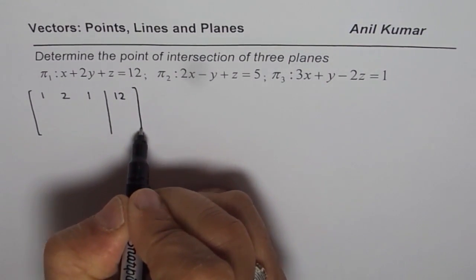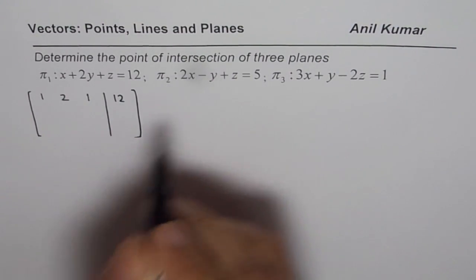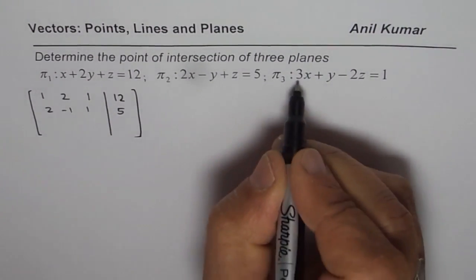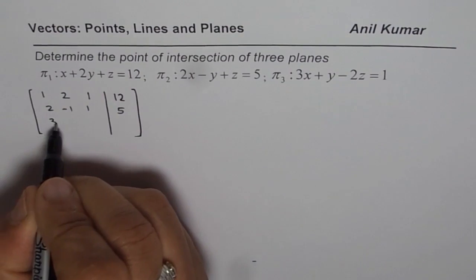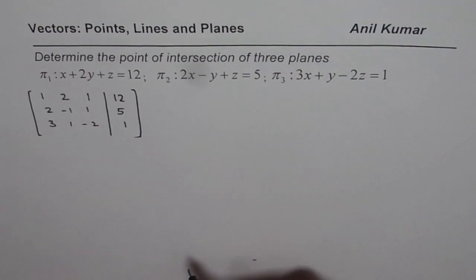So that becomes the augmented matrix. Similarly for the second plane, 2, -1, 1, 5. And third, 3, 1, -2 and 1. So that is the augmented matrix.